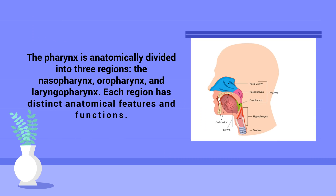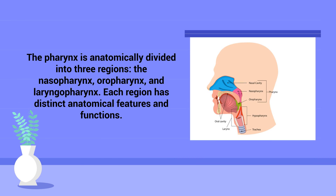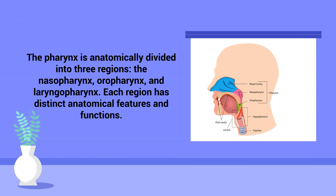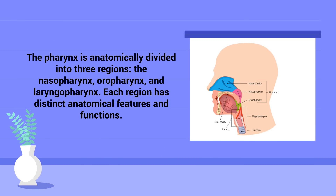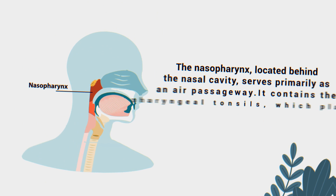The pharynx is anatomically divided into three regions: the nasopharynx, oropharynx, and laryngopharynx. Each region has distinct anatomical features and functions.